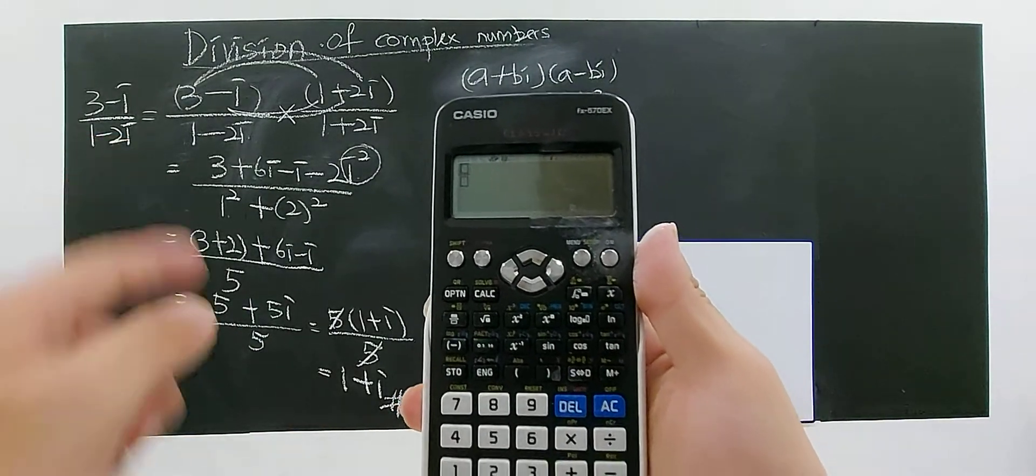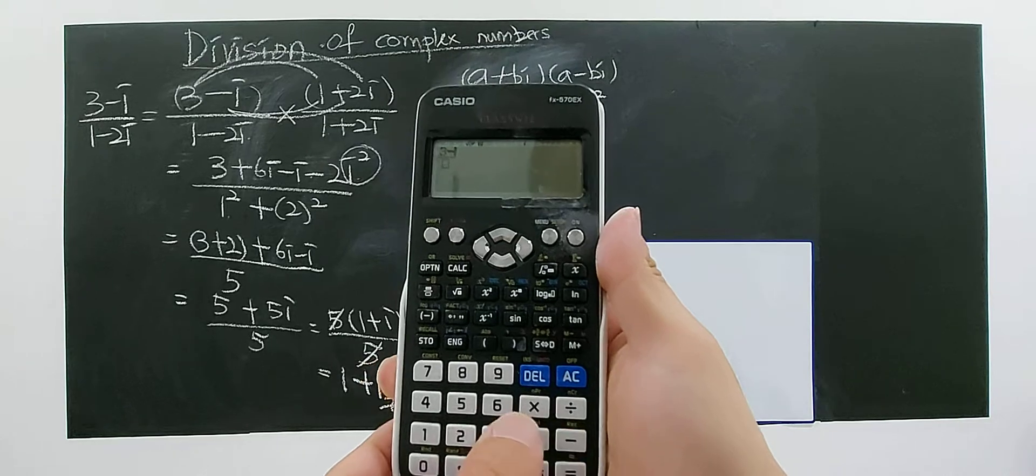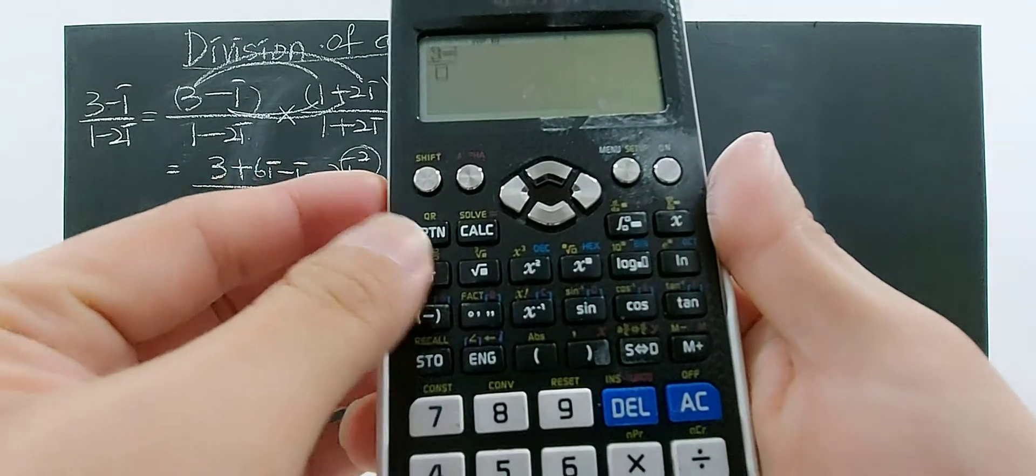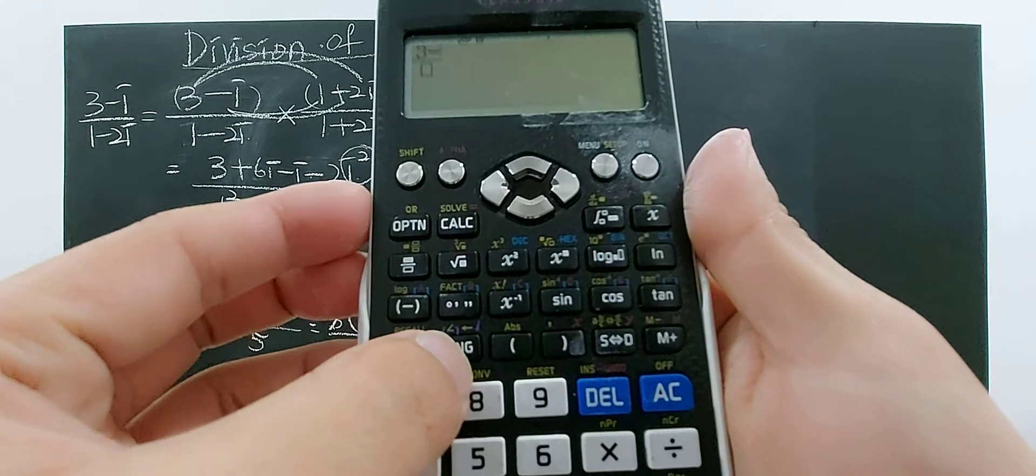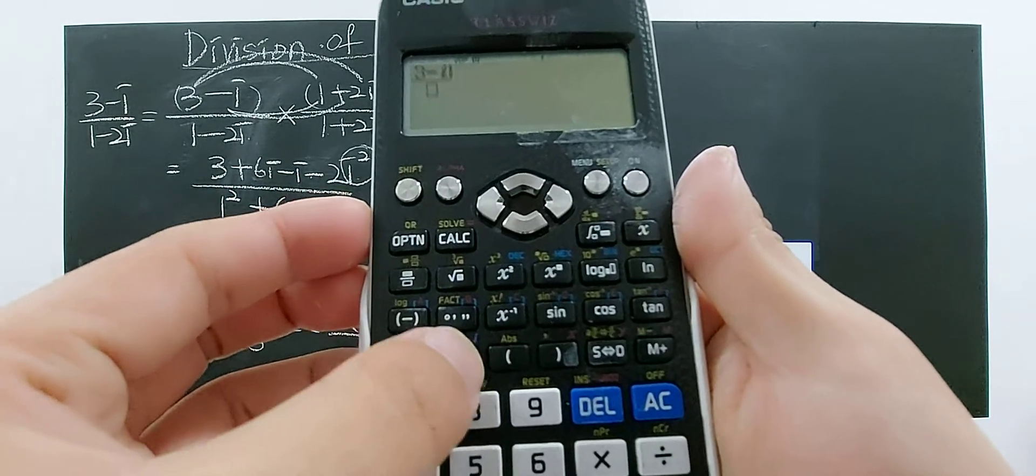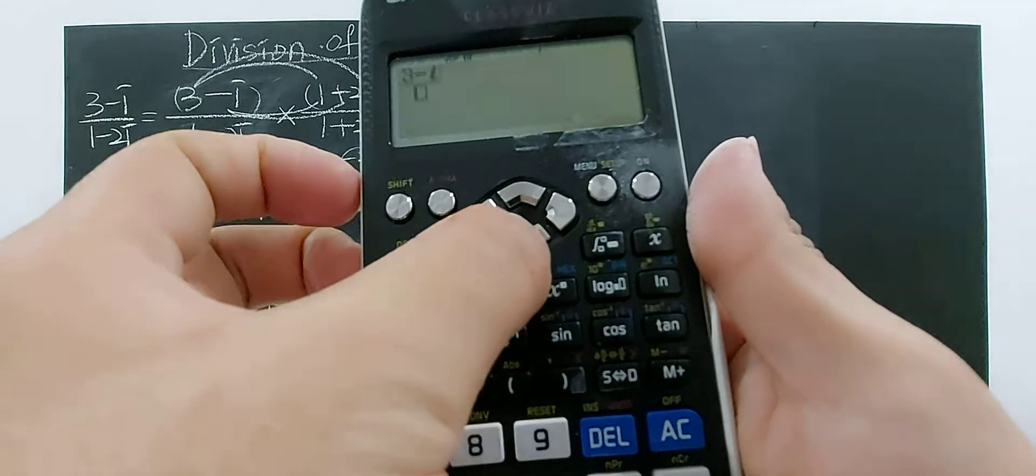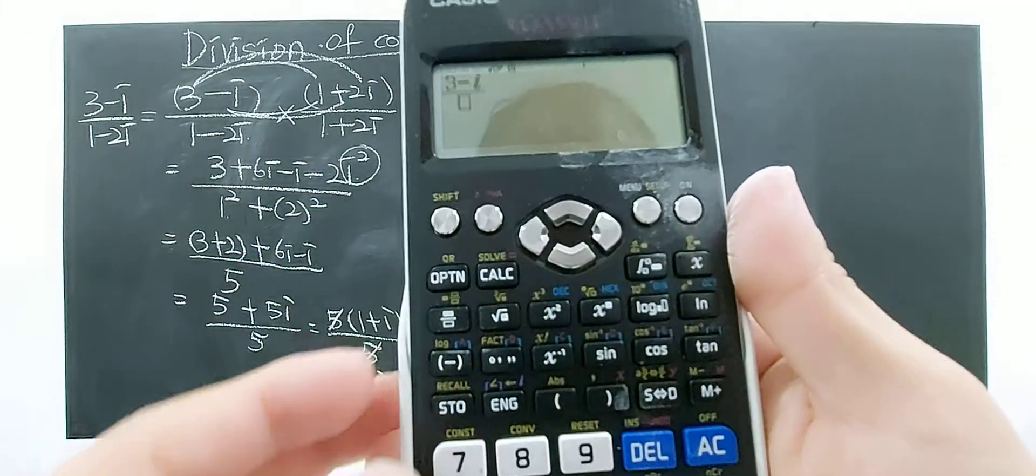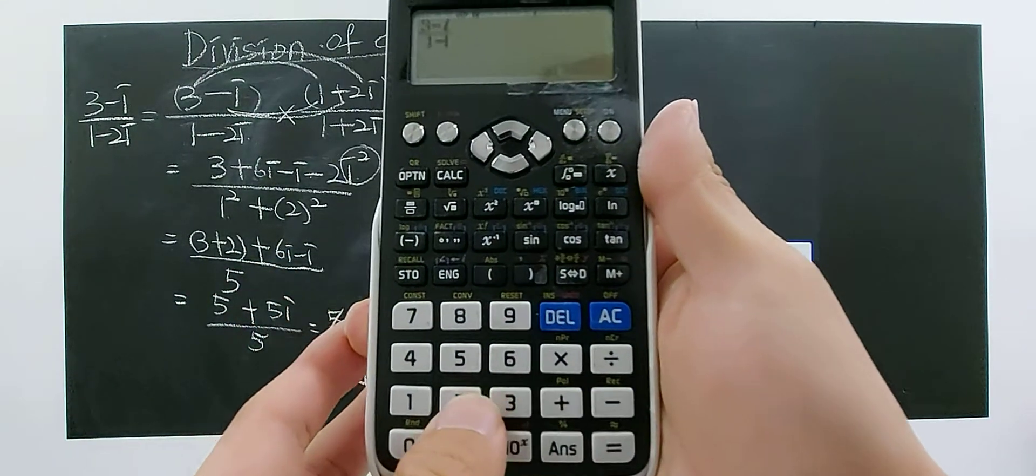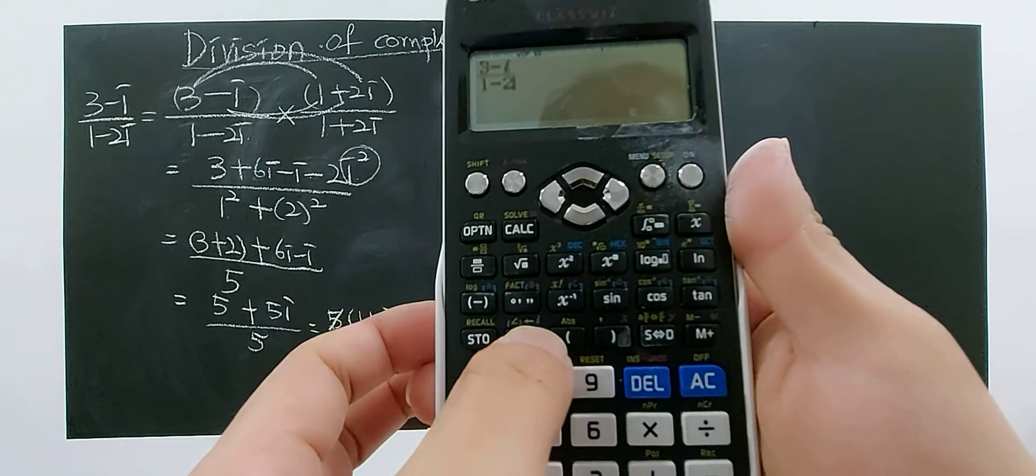This one, 3 minus i. Where to get the i? You look at this—can you see here you have an i? So you just eng this one i. For below, 1 minus 2i. So 1 minus 2, then for this eng, you can see i here, 2i.